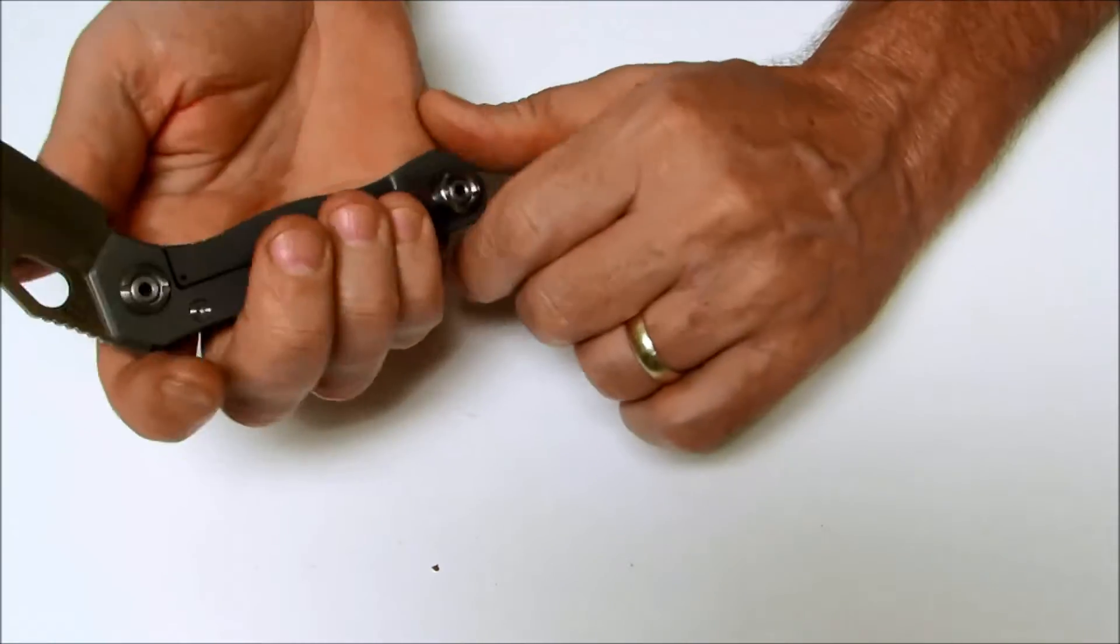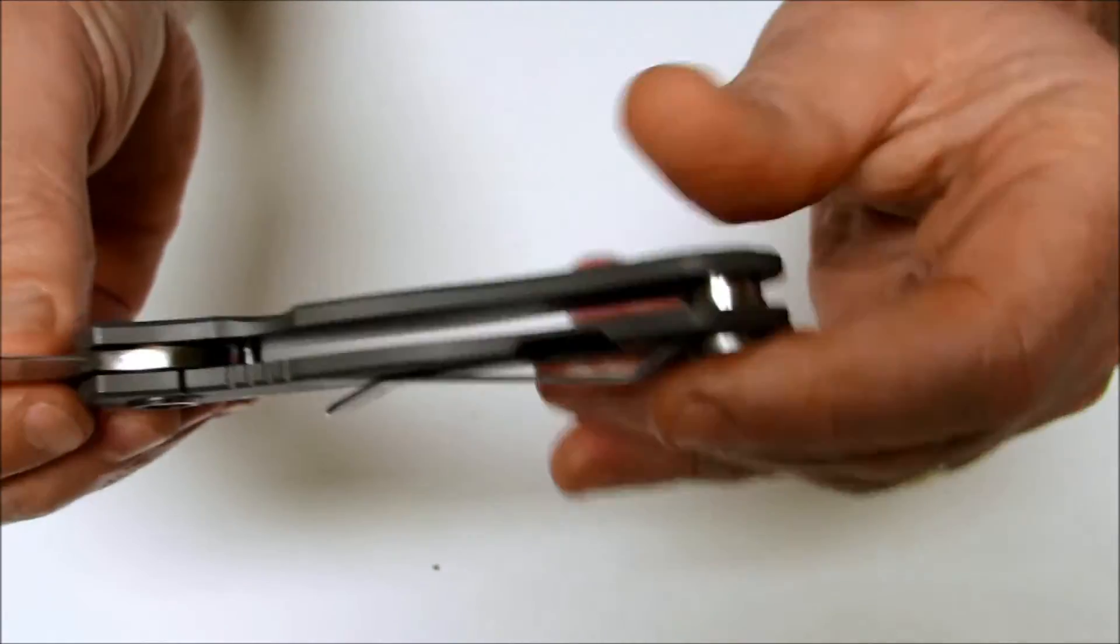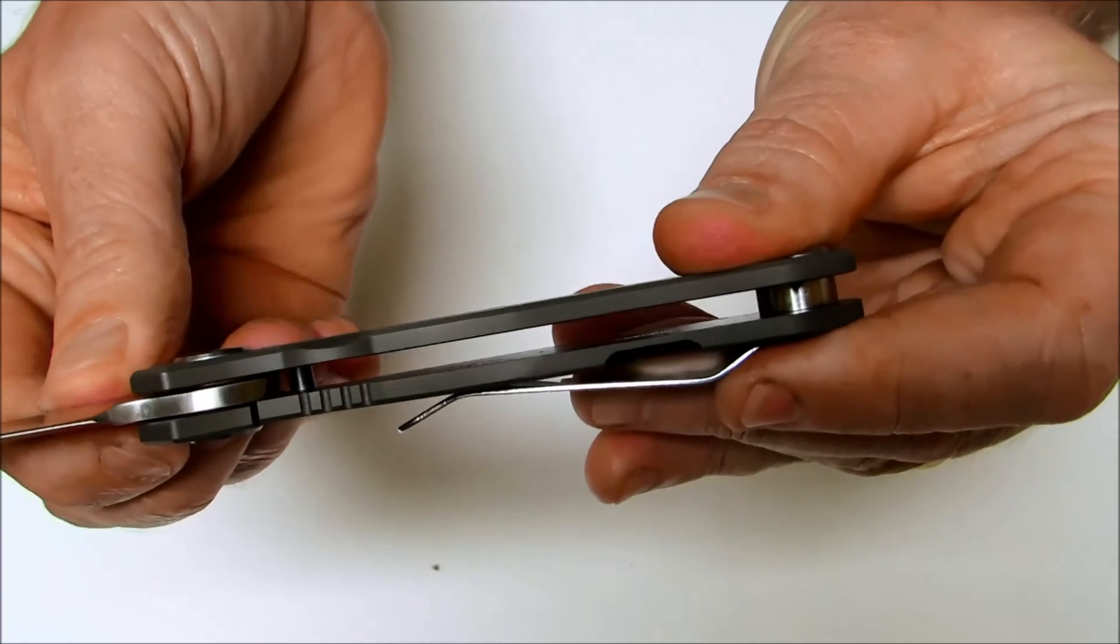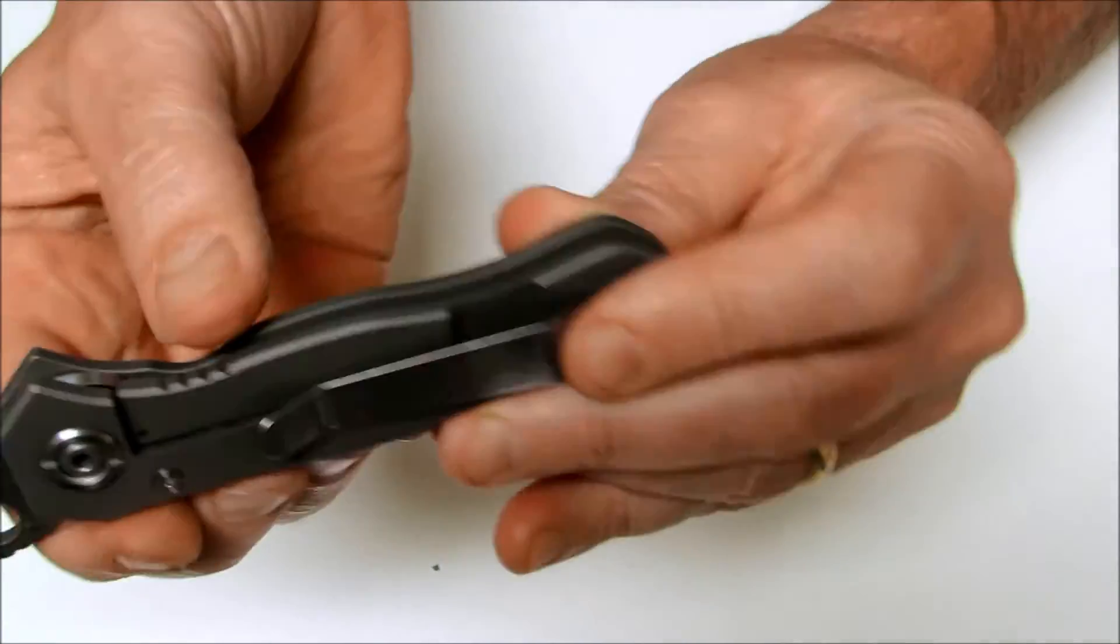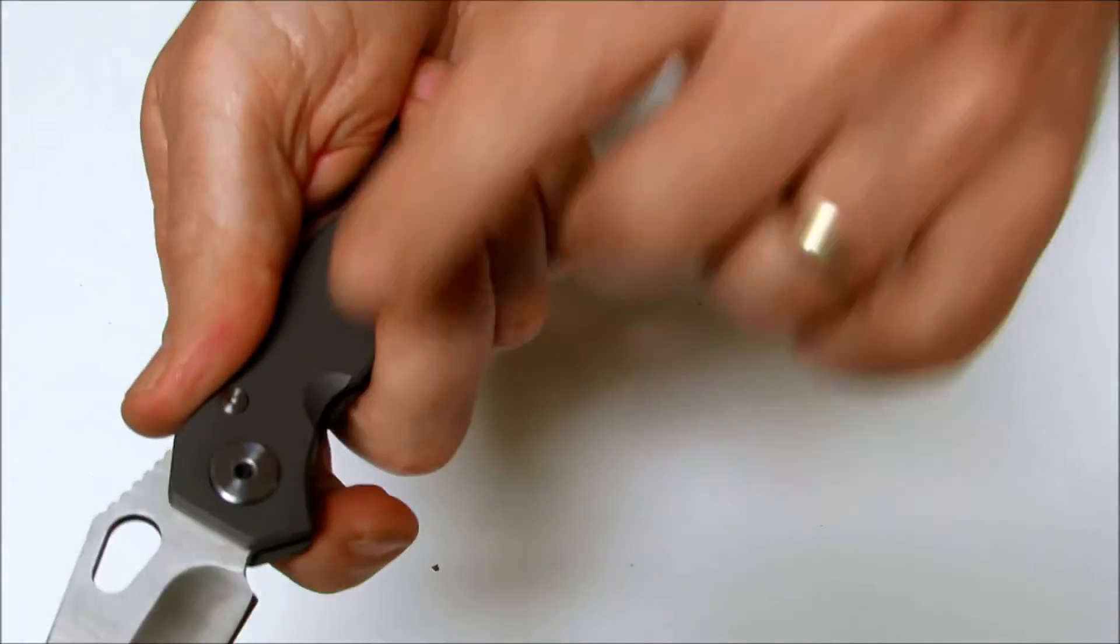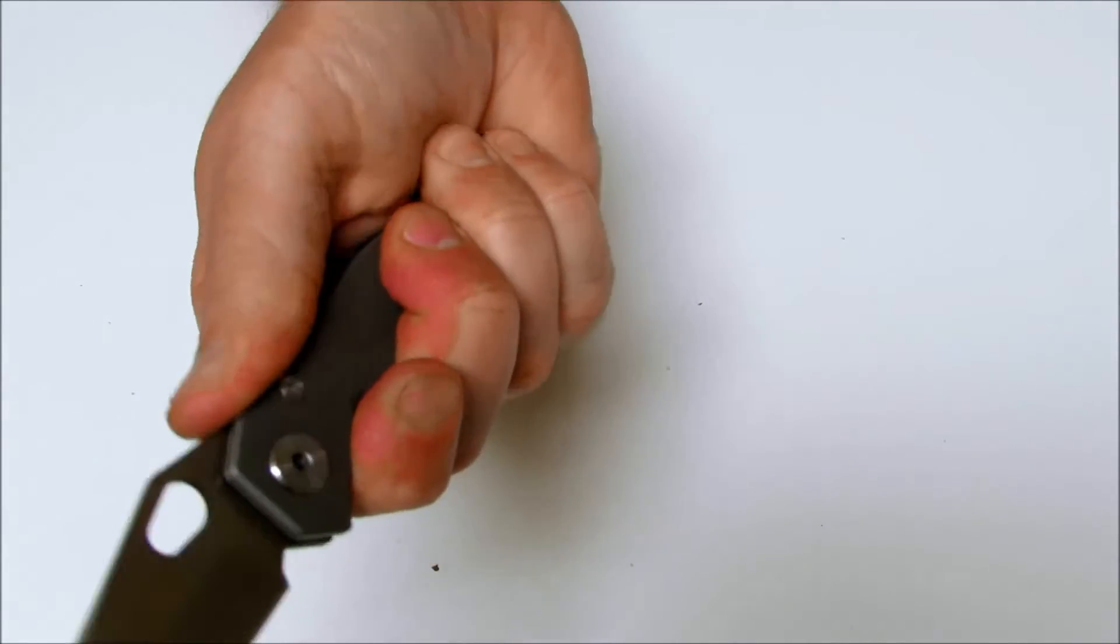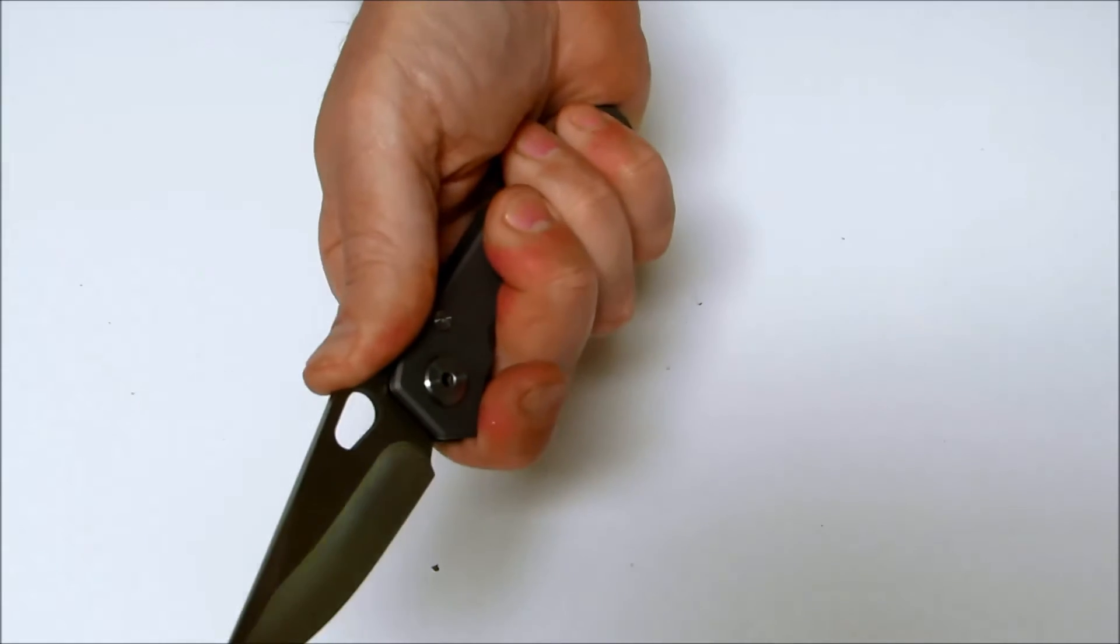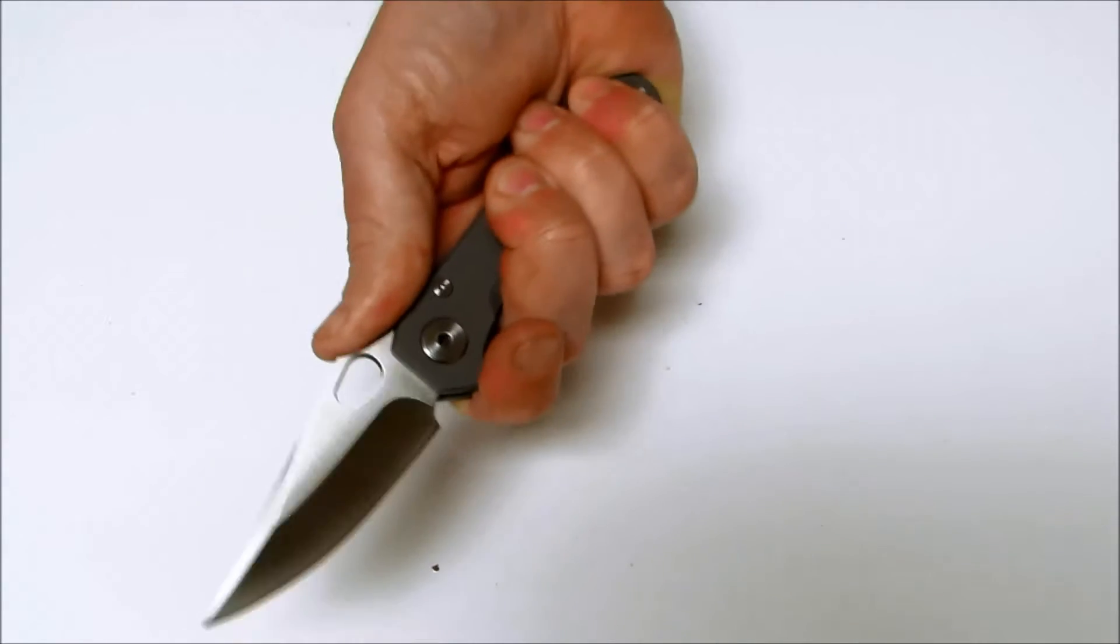Lock up is via a titanium frame lock and here you can see a close up of that in action. There's some jimping traction ridges down there, a divot in the handle for your index finger. You also have a jimped thumb ramp which gives you a great purchase.